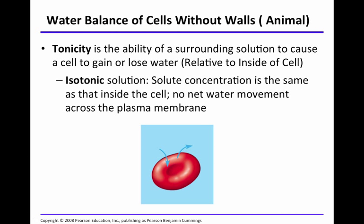How do cells truly behave in solution? That was the experiment, but how does osmosis work in animal cells? We do not have walls, so how does water balance work in cells without walls? Tonicity is the ability of a surrounding solution to cause a cell to gain or lose water relative to the inside of the cell. In an isotonic solution, there's no net water movement. If the solute concentration outside a red blood cell equals the concentration inside, there's no net movement of water across the plasma membrane.